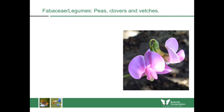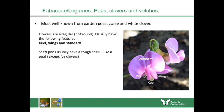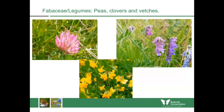Another common family is the Fabaceae or legumes, including peas, clovers and vetches. Their flowers are not regular — they have a standard which is the big petal at the back, wings on either side, and a keel underneath. These are the three main features to identify them. If you find their seed pods you'll see they have a tough shell just like a pea, except for the clovers which have very small flowers.